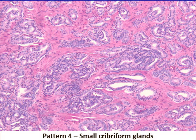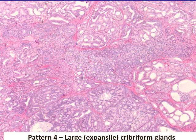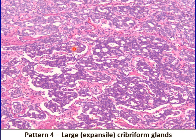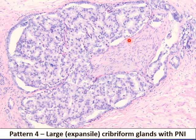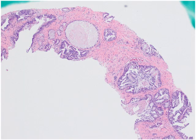Let us review the spectrum of cribriform glands. Here is a nice example of small infiltrative cribriform glands, and here is an example of large cribriform, also referred to as expansile. One definition utilized is that when you have more than 12 luminae, you should consider that as expansile cribriform glands. Here is another example of expansile cribriform glands in a more infiltrative irregular pattern, and here is an example showing perineural invasion, which is common with this particular pattern. In this example, you see a cluster of small well-formed glands surrounded by large densely cribriform glands.